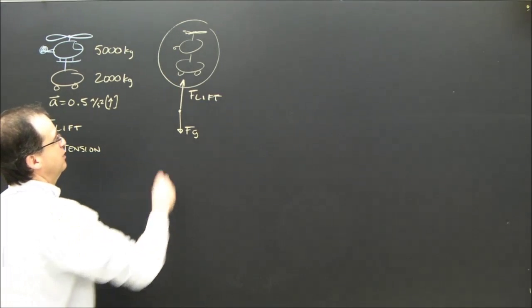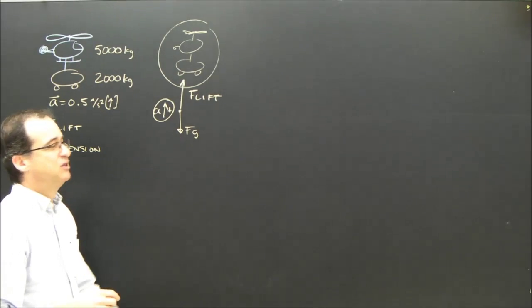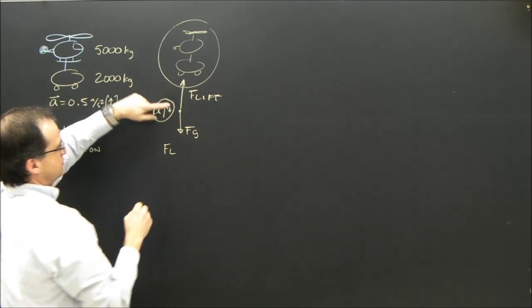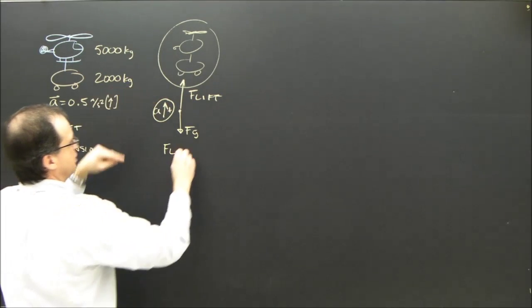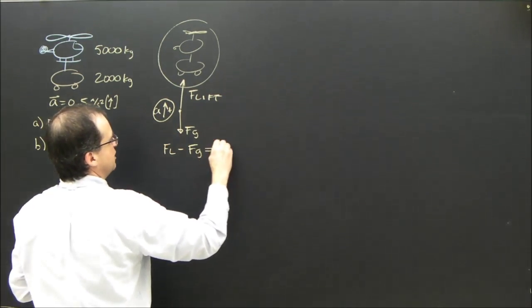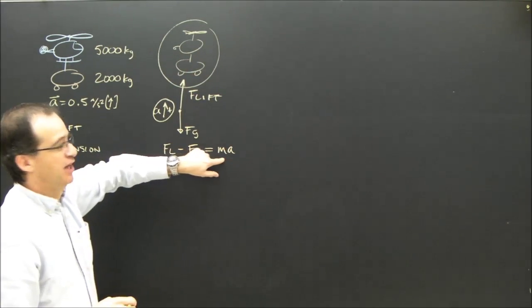Okay, so I have to just plug in my formula. It's accelerating up, so up is positive. So my formula is FL, because that's the one up and it's positive, minus FG, that's down, it's defined as negative, equals MA. Everything in there equals MA.